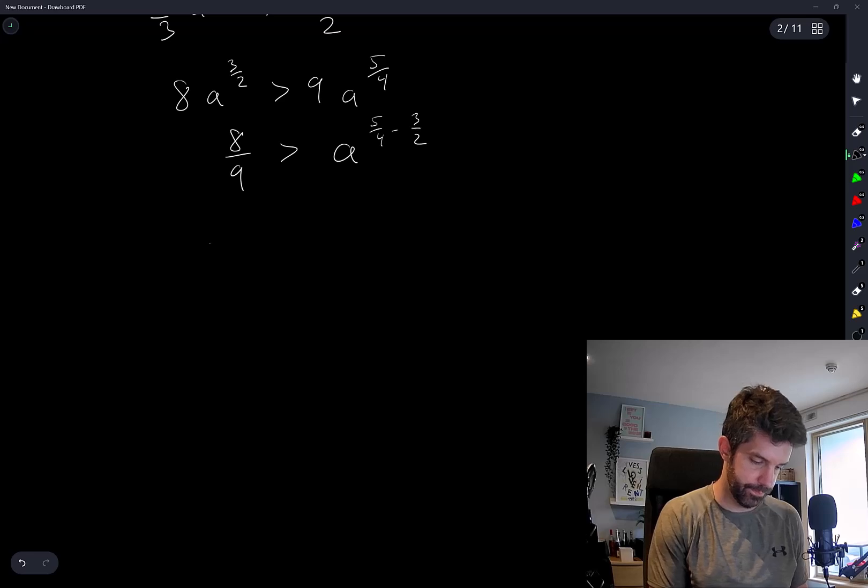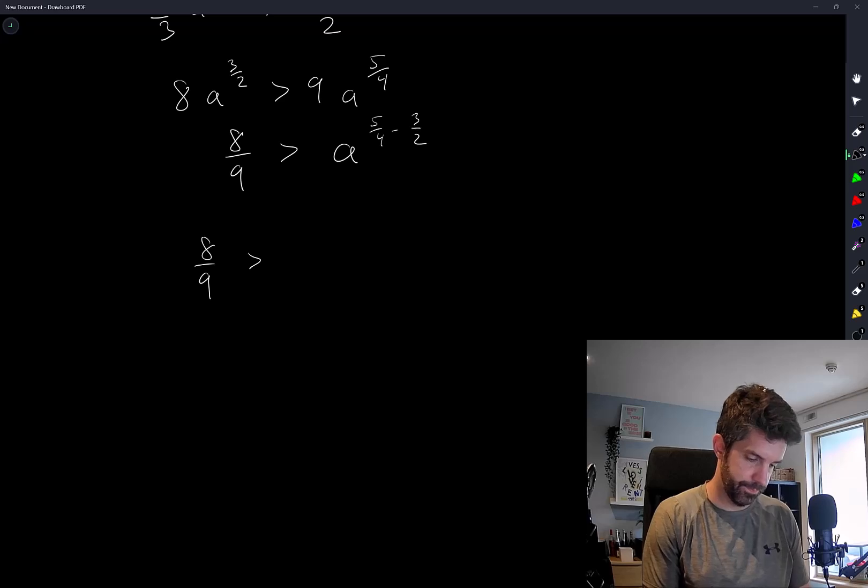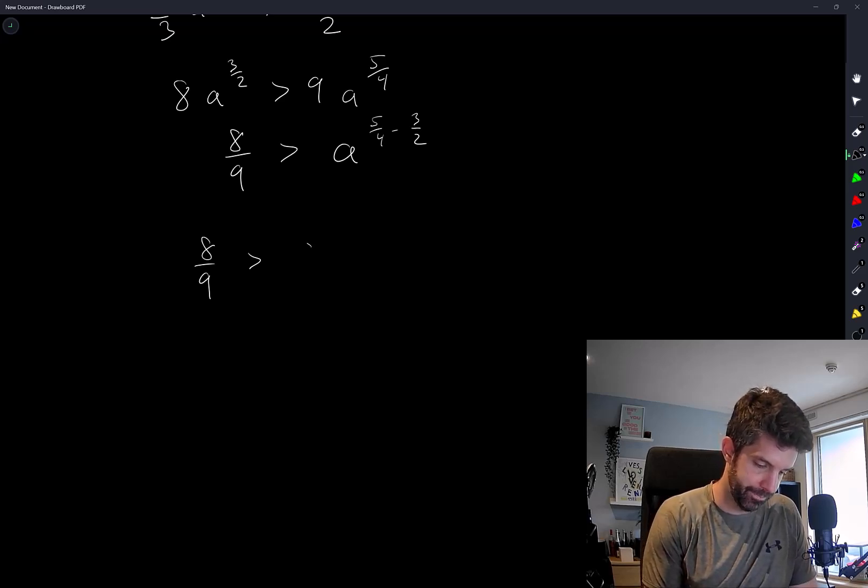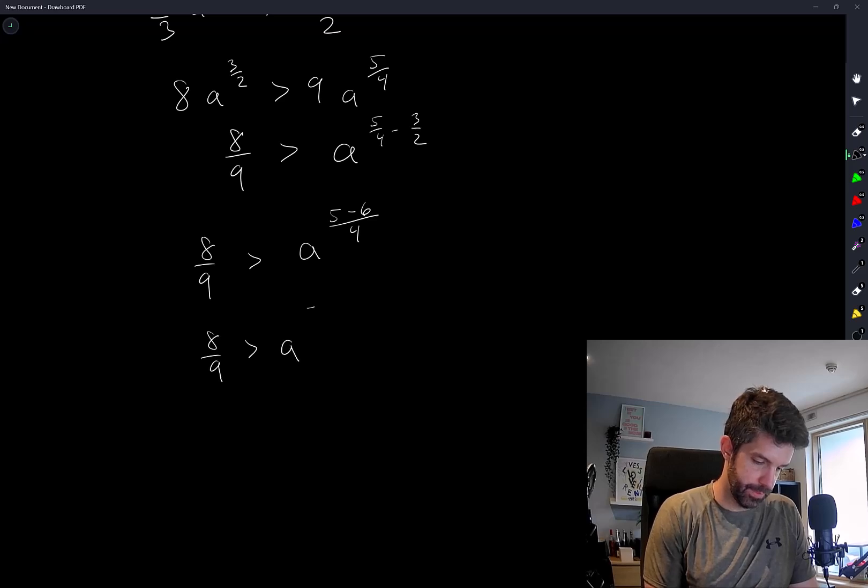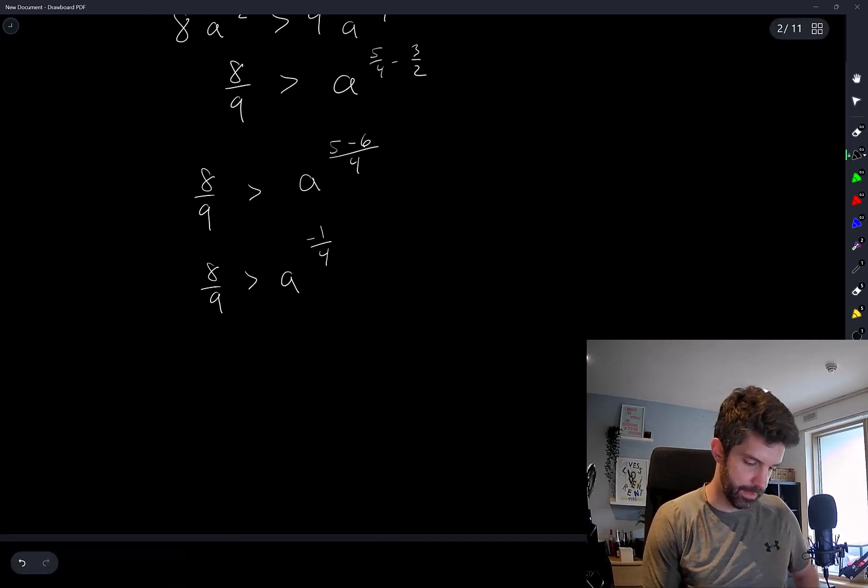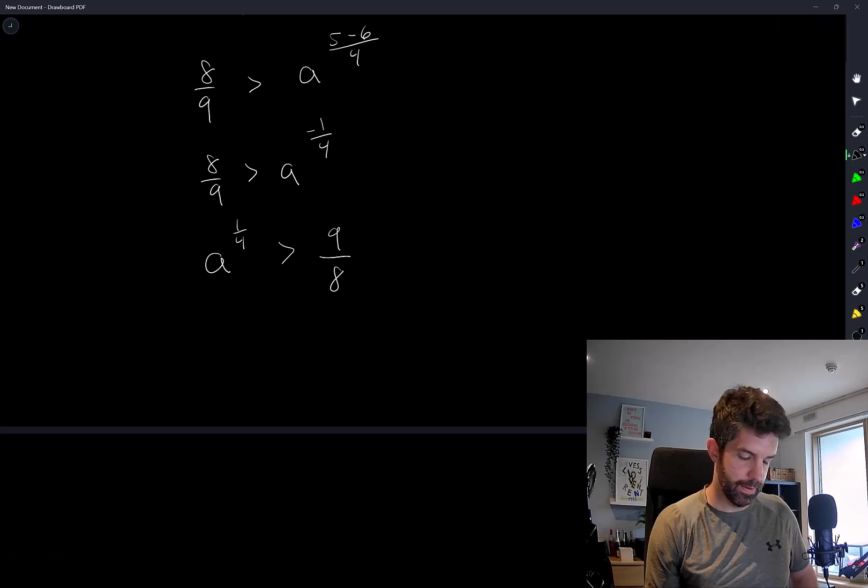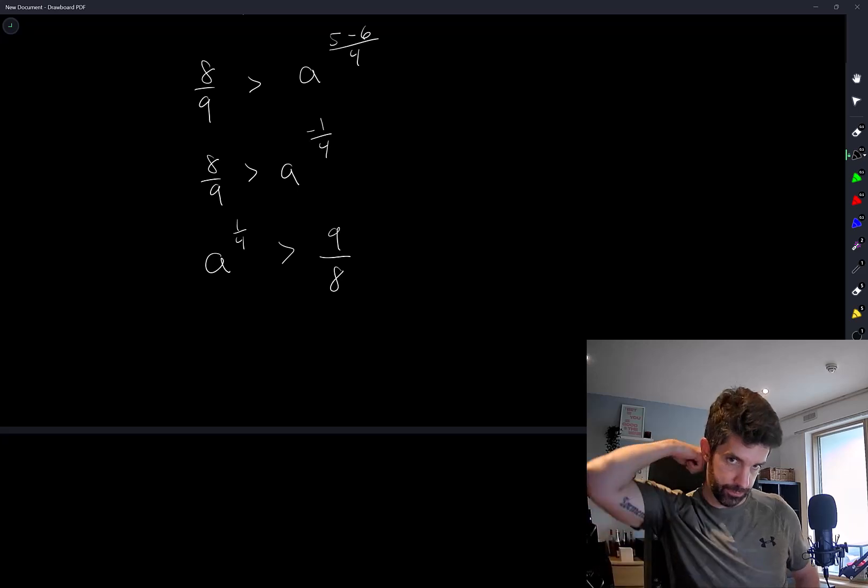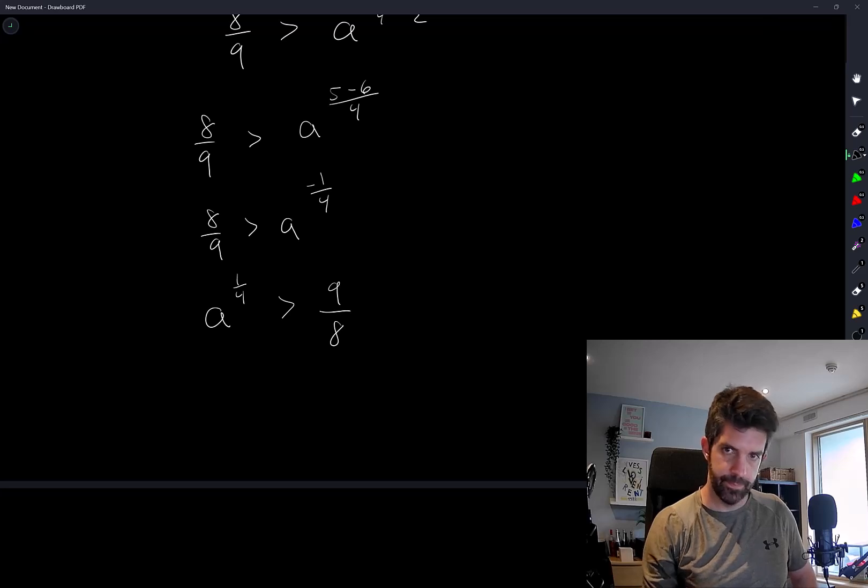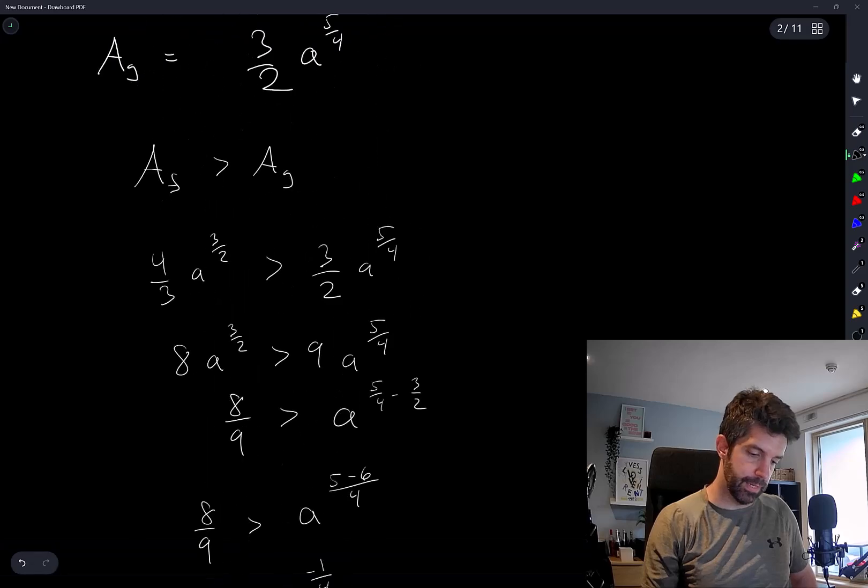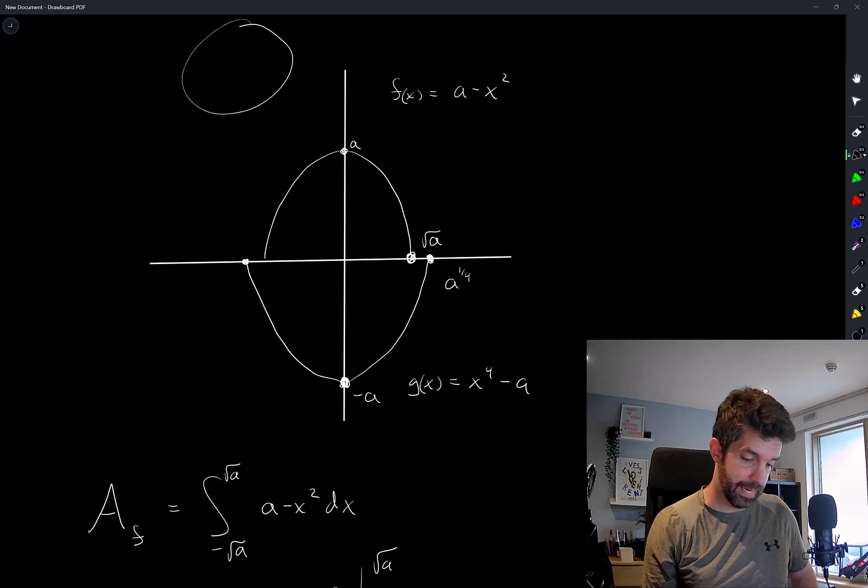Let's write this as 8 over 9 is greater than a to the 5 over 4 minus 3 over 2. What does that equal? 5 minus 6 over 4, negative 1 over 4. So this means a to the 1 over 4 is greater than 9 over 8. This doesn't look like any of the answers, does it? I hope I didn't make any arithmetic mistakes. I might actually just totally start again.